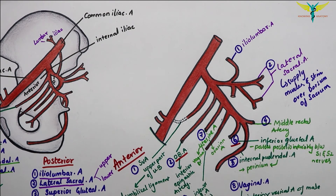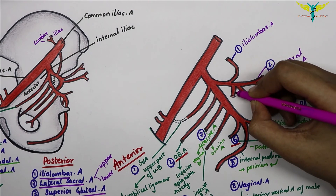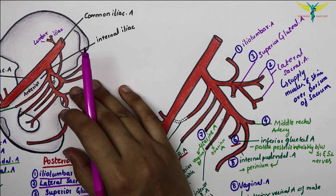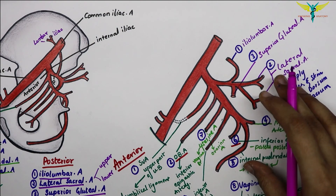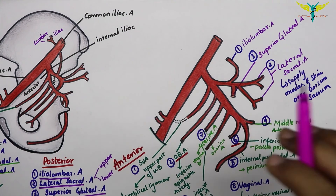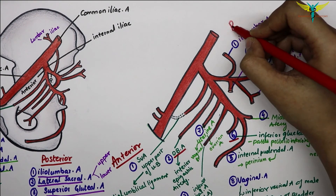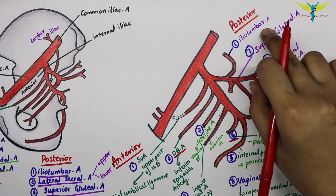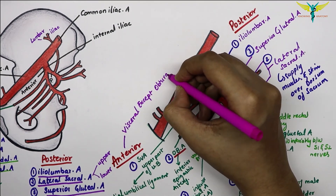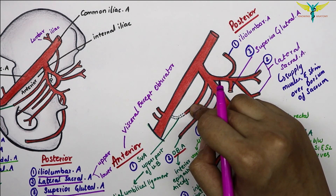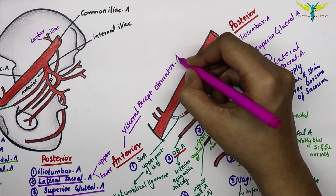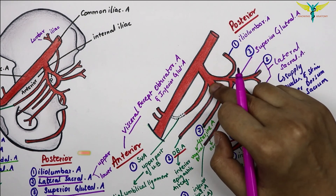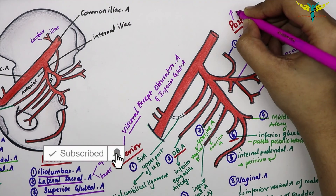The last branch of the posterior division is the superior gluteal artery. It passes backwards between the lumbosacral trunk and ventral ramus of S1, then leaves the pelvis through the greater sciatic foramen along with the superior gluteal vessels. Remember: all branches of the posterior division of the internal iliac artery are parietal branches, while all branches of the anterior division are visceral branches except the obturator and inferior gluteal arteries.